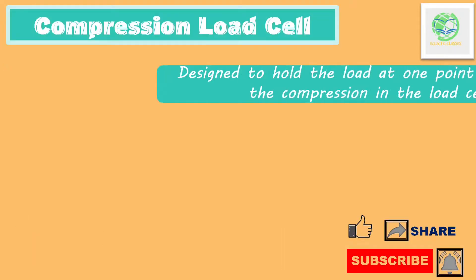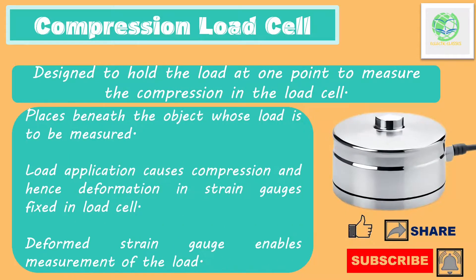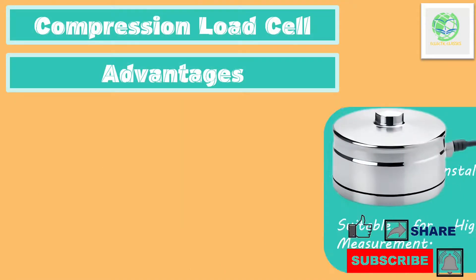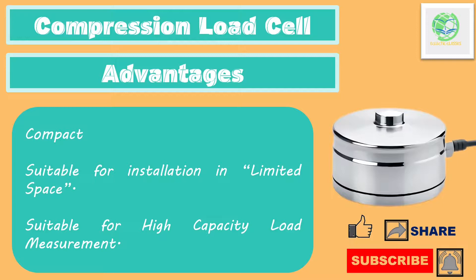Compression load cells are designed to hold a load at one point to measure the compression in it. A compression load cell is placed beneath the object whose weight needs to be measured. As it is below the object, it gets compressed due to the weight of the object. Due to this compression, the strain gauges in the load cell get deformed, resulting in an electrical signal for load measurement. Advantages of compression load cells are that they are quite compact and suitable for applications where space is limited, and they are suitable for even very high capacity loads.